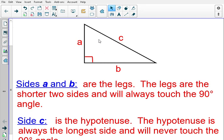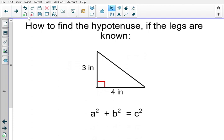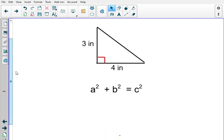So, let's go ahead and see how to apply the Pythagorean Theorem. This is how we're going to find the hypotenuse if the legs are known. Here in this example, we have a right triangle. Here's our right angle and we have a side that is three inches and a side that is four inches. These two sides happen to be the legs, so they're A and B.